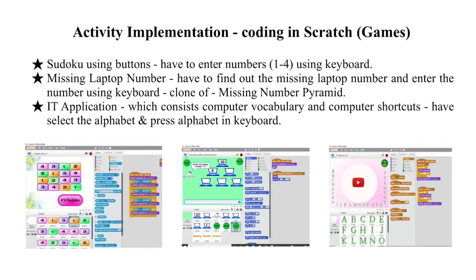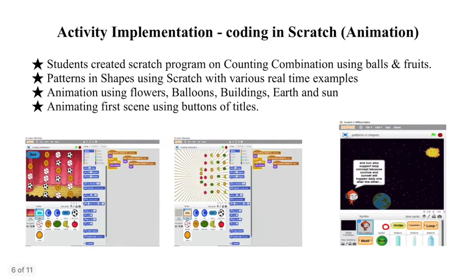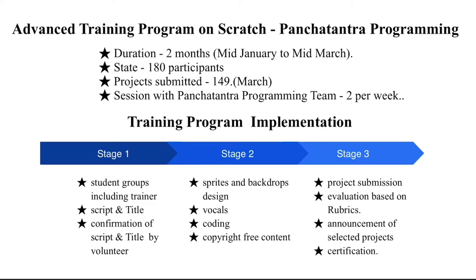After lockdown, we implemented CT by making activities like animations and games using Scratch. For the gaming part, we did activities on Sudoku, IT vocabulary, IT shortcuts, and missing number pyramid using concepts of key press and sprite click in Scratch. For animation, we did activities on patterns with real-time examples like Sunrise, Sunset, and Revolving Earth for loops, and some flowers, buildings, and balloons for motif and tessellation.